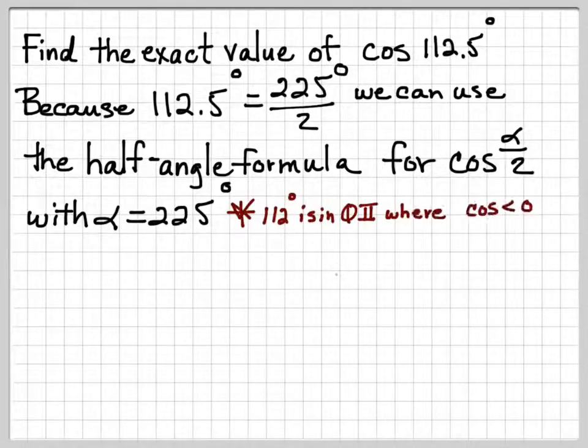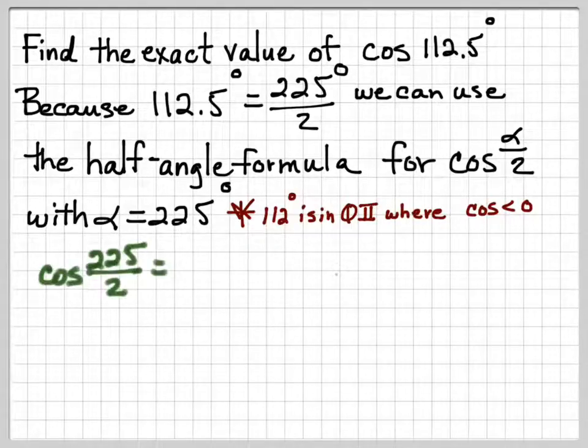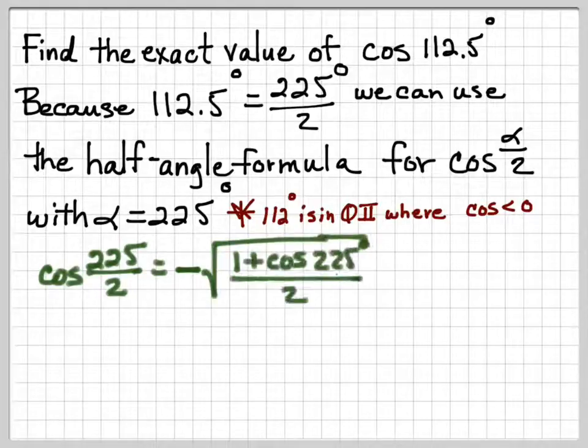Now, here's where the plus or minus comes in. Take a look at the half angle—112.5° is in the second quadrant, and cosine is negative in the second quadrant. So we're going to use the negative root. So cos(225°/2) is negative square root of (1 + cos 225°)/2.